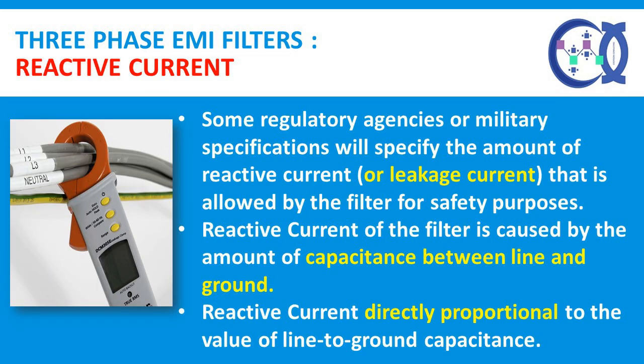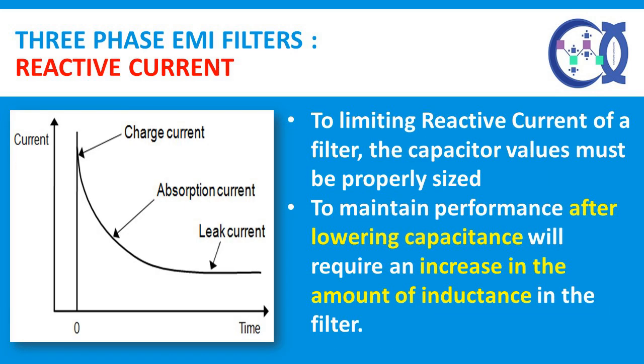This frequency range should be accompanied by the desired insertion loss or performance of the filter throughout the frequency range, in decibel. Reactive or leakage current — some regulatory agencies or military specifications will specify the amount of reactive current, or leakage current, that is allowed by the filter for safety purposes. Reactive current of the filter is caused by the amount of capacitance between line and ground. Increases in the values of the line-to-ground capacitance will cause the reactive current to increase, while decreases will lower reactive current. In order to limit reactive current of a filter, the capacitor values must be properly sized. Lowering the value of the capacitors will be detrimental to the performance of the filter. To maintain performance after lowering capacitance will require an increase in the amount of inductance in the filter.